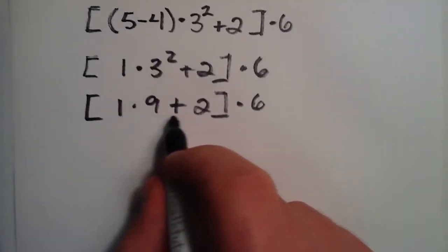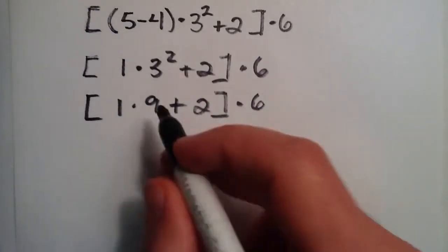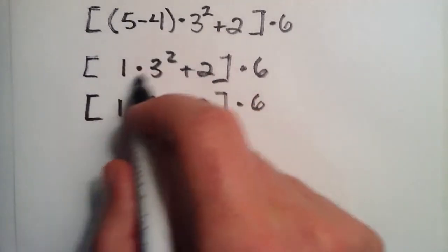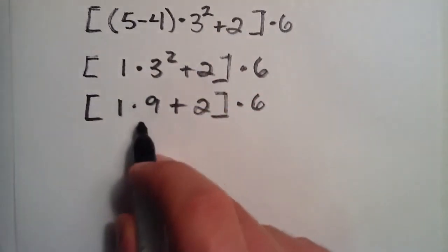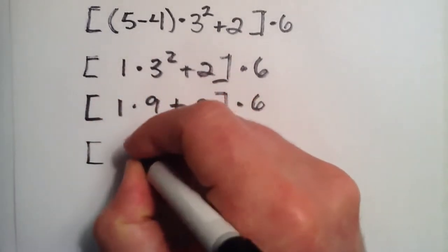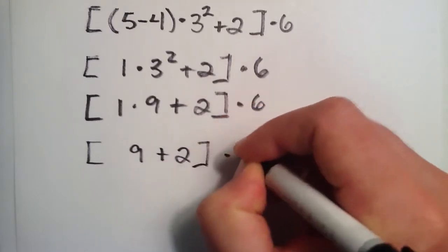Now, multiplication is next. It's number 3 on our list. And we've taken care of all of the exponentials and any grouping mechanisms in here already, so we do the multiplication. 1 times 9 is simply 9.